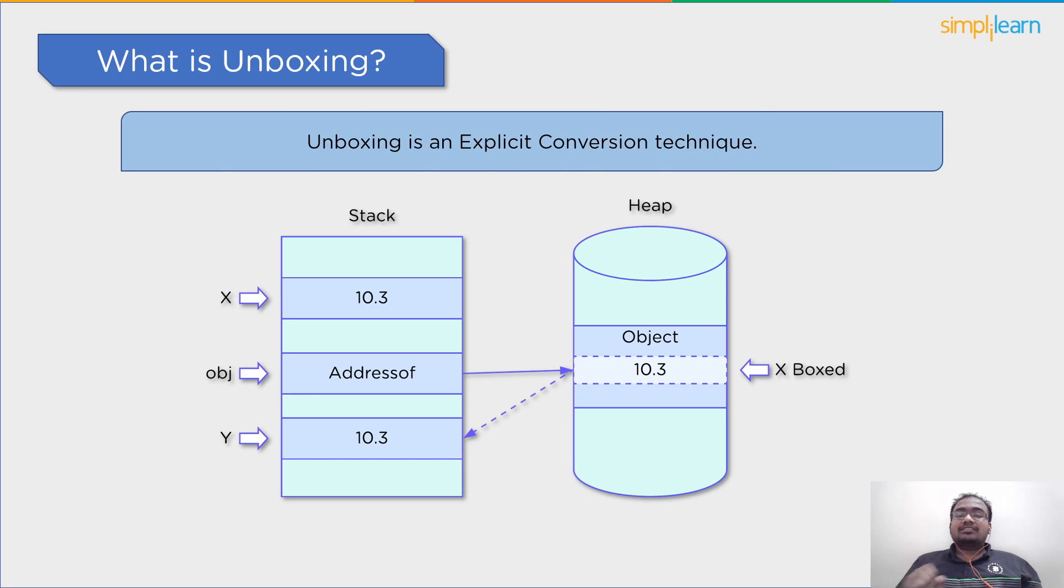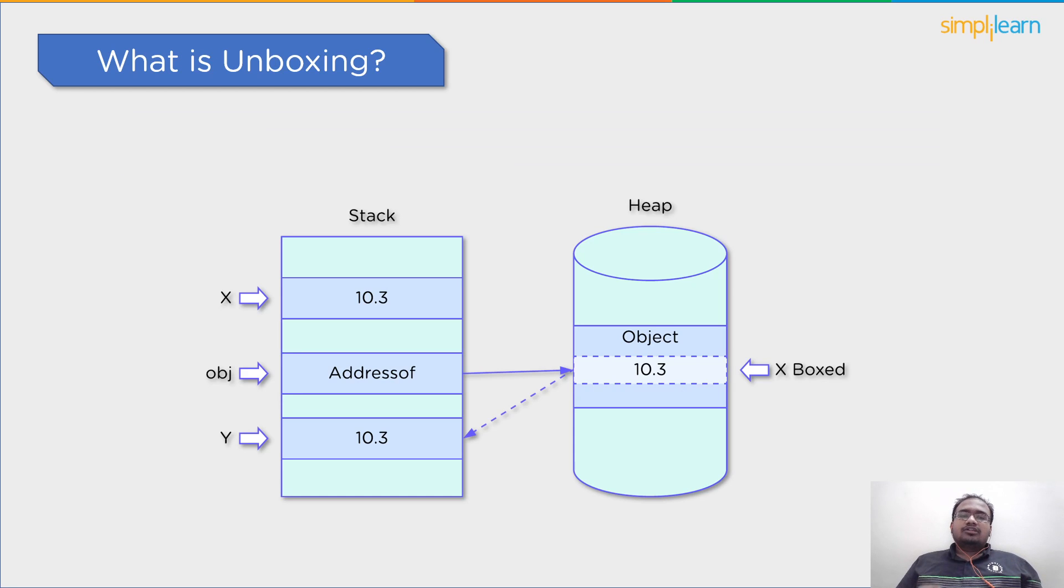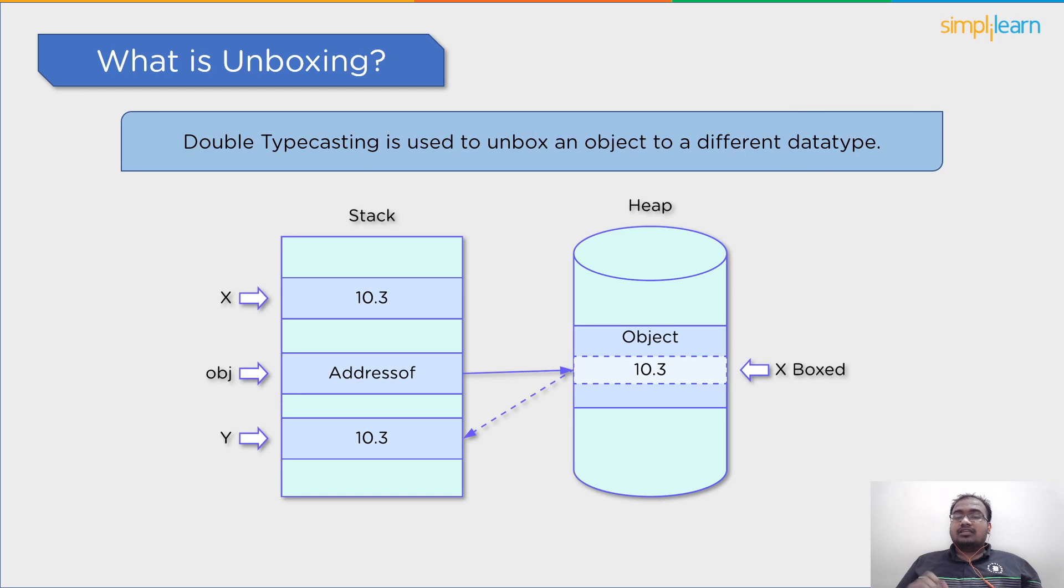Unboxing is an explicit conversion process requiring us to explicitly mention the data type during unboxing. You must double cast if you want to unbox an object into a different data type than its predecessor.